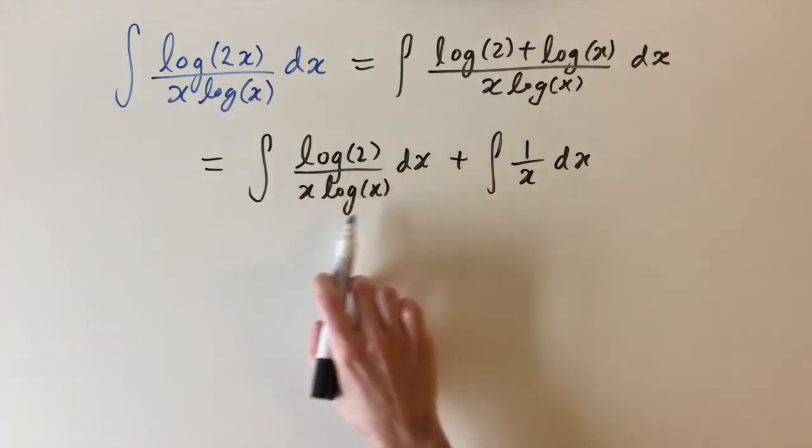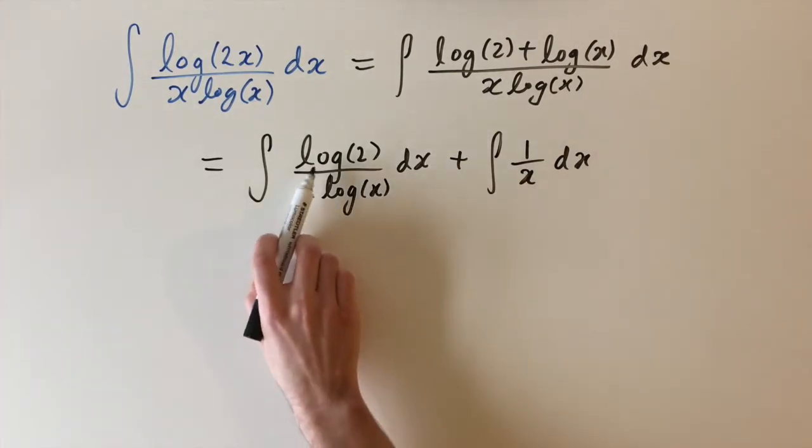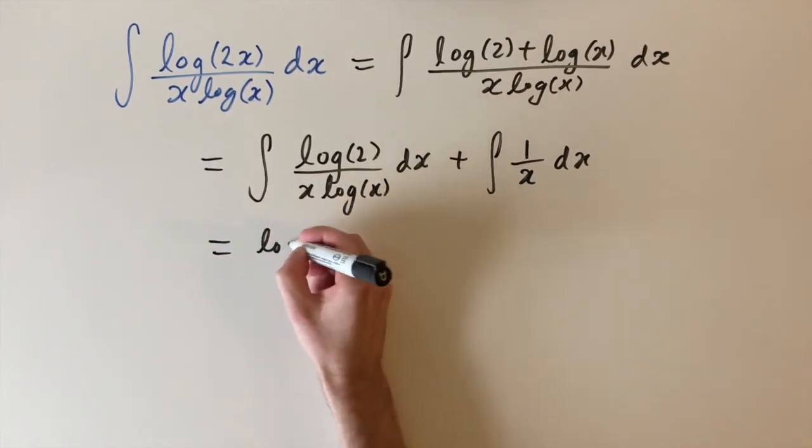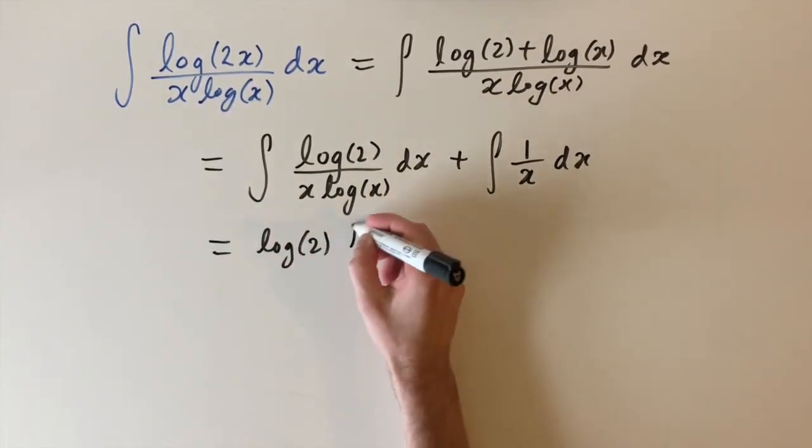So for the first integral, this still needs a little bit of work. We're going to start off with pulling out the constant. So we have log of 2 times the integral.